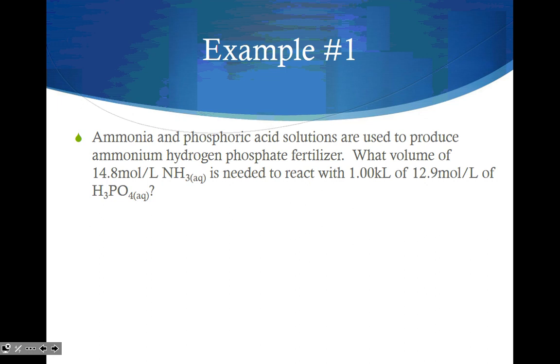So here's an example. Ammonia and phosphoric acid solutions are used to produce ammonium hydrogen phosphate fertilizer. What volume of 14.8 mol/L NH3 is needed to react with 1.00 kL of 12.9 mol/L of H3PO4? Now here, when you have kiloliters, you can want to do one of two things. You can either keep the kilo there, just know that at the end your last answer is going to have the kilo part of the kiloliters, or you can convert to liters and not have to worry about it. The first example, I'm not going to convert just to show you what happens.